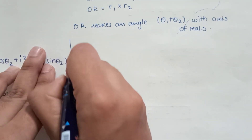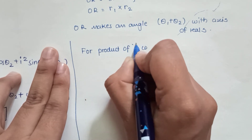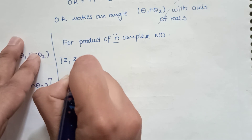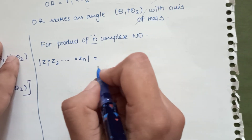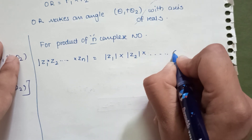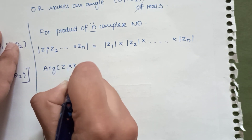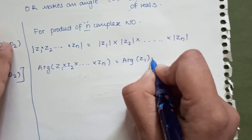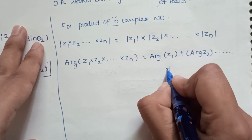For the product of n complex numbers: |Z1 · Z2 · ... · Zn| = |Z1| × |Z2| × ... × |Zn|. And the argument of Z1 · Z2 · ... · Zn equals argument of Z1 plus argument of Z2 plus ... plus argument of Zn.